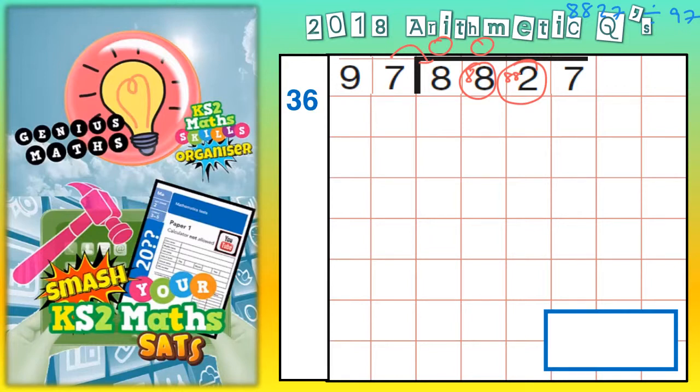So the easiest thing to do is the chunking method. So we're going to write chunks of 97. So you could have one lot of 97 is 97. You could have 10 lots is 970. 100 lots is 9,700.